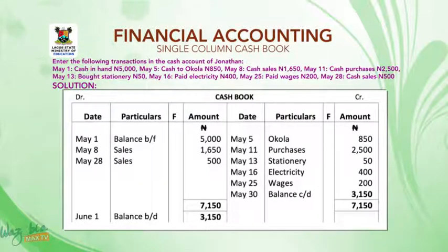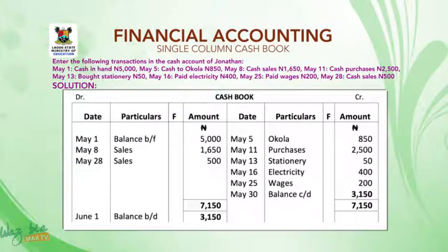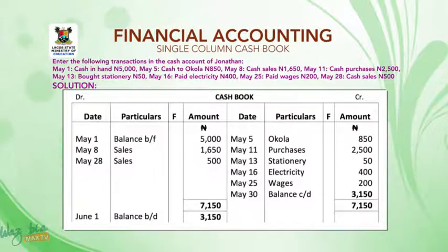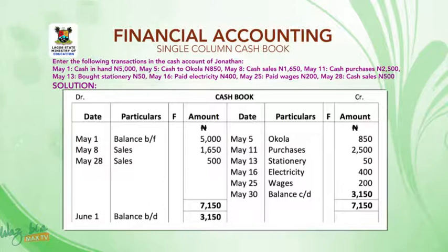May 11, cash purchases, 2,500 naira — purchases means you bought goods. When you buy, money goes out, so you pay to whom you bought from. It means you record it on the credit side. Record the transaction as May 11; under particulars write 'purchases'; and under the amount on the credit side write 2,500 naira. Let's move on quickly because of our time.